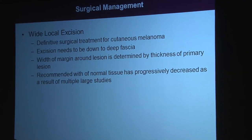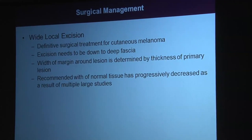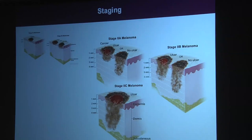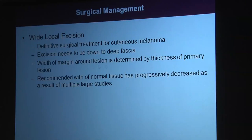For disease localized to the skin, the surgical management is wide local excision — the definitive surgical treatment of cutaneous melanoma. The excision needs to go all the way through the skin, through the fat, down to the muscle layer. We don't take muscle, but we go down to it to ensure all tissue is removed, minimize local recurrence, and give the pathologist sufficient tissue for an accurate depth assessment. The width of the margin is determined by the depth of the tumor based on that excisional biopsy.